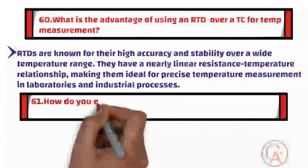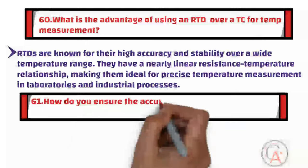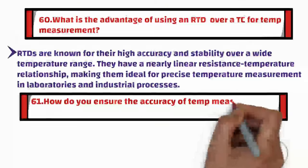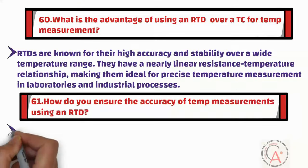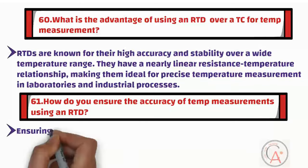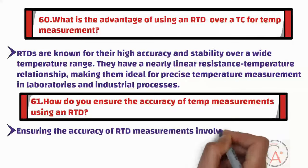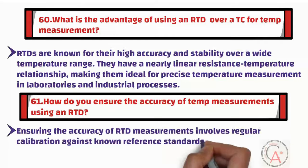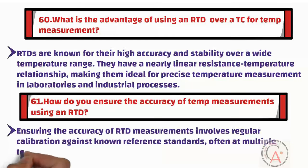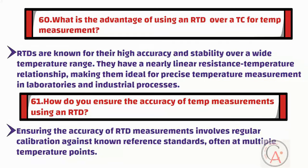Question sixty-one is: how do you ensure the accuracy of temperature measurements using an RTD? Ensuring the accuracy of RTD measurements involves regular calibration against known reference standards, often at multiple temperature points. The use of precision resistors in the measurement circuit and proper lead wire compensation are also essential.